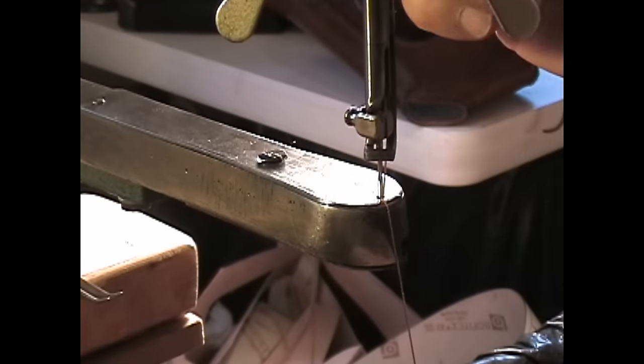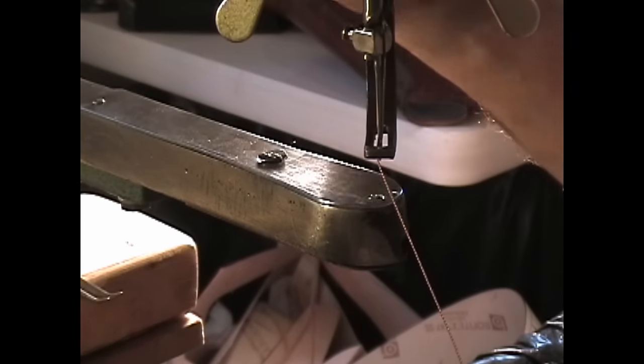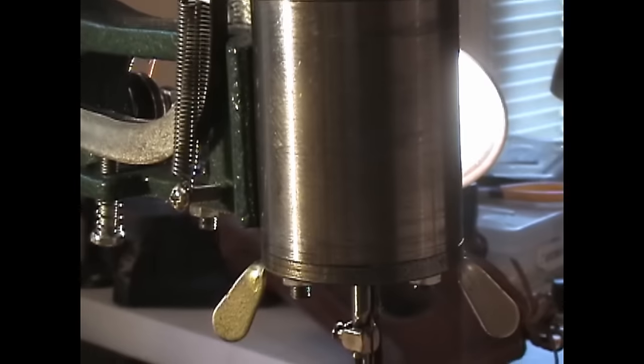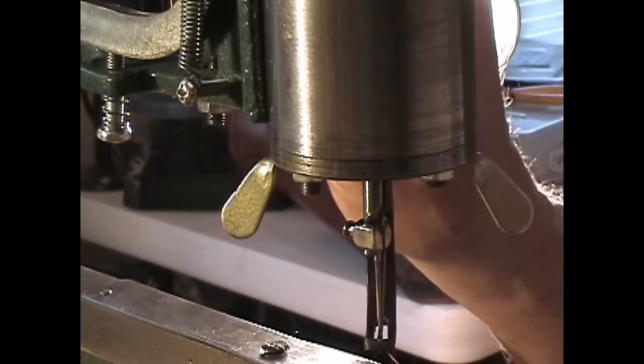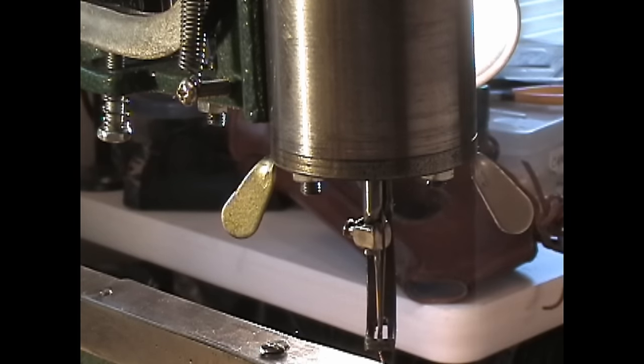So you need to take the tension off of the upper thread by pulling down on it up here. It's on the opposite side of the machine, so I can't show it to you. But you just put your finger on it and pull it down and get it loose like laundry line.